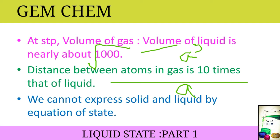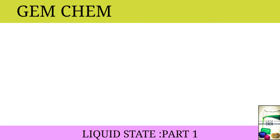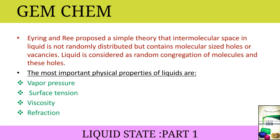Eyring and Rhee, two scientists, proposed a simple theory that intermolecular space in a liquid is not randomly distributed — there is a particular pattern. The intermolecular spaces are replaced by holes, so the liquid contains molecular-sized holes or vacancies, which are also circular in shape. Liquid is considered as a random congregation — an arrangement — of molecules and these holes.